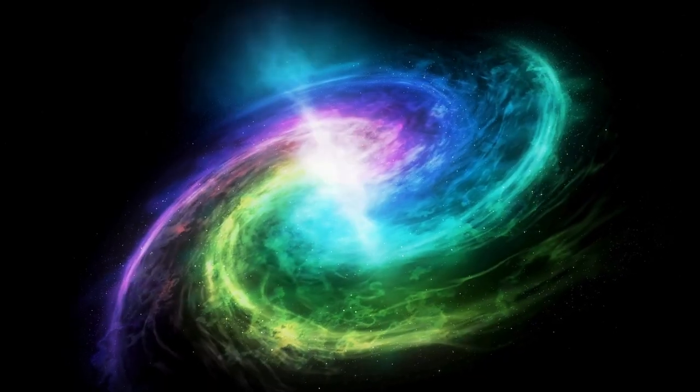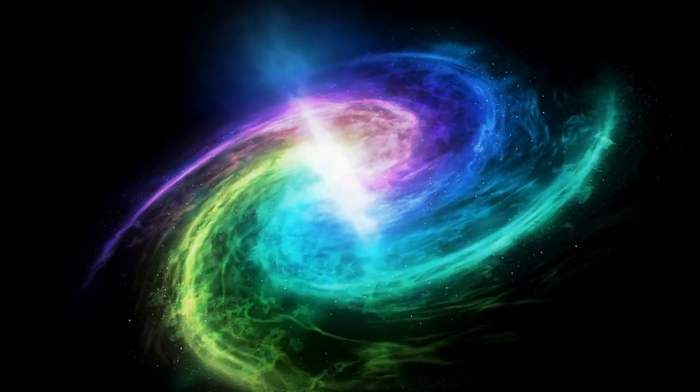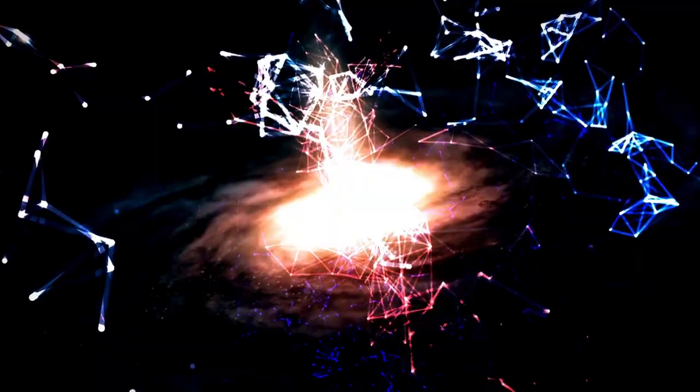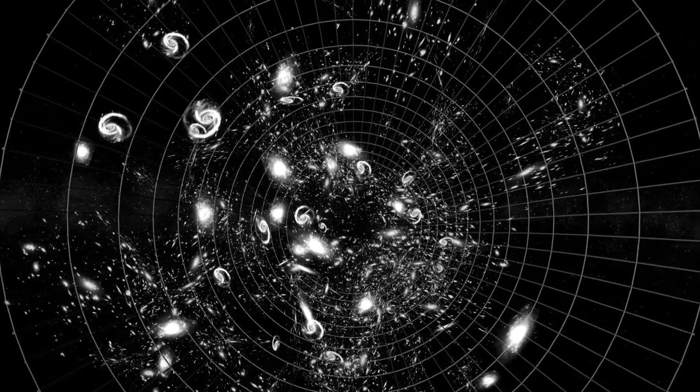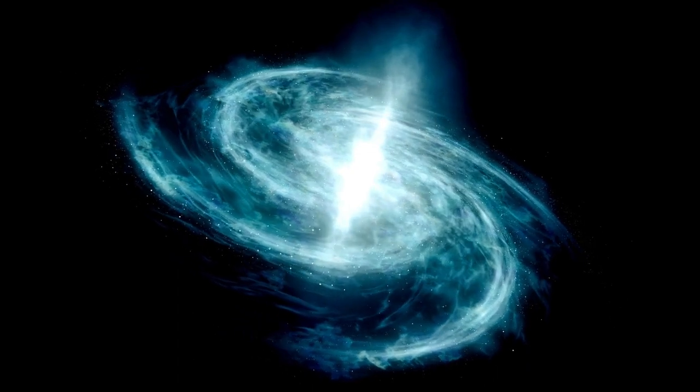Who theorized that black holes could provide an unlimited source of energy by extracting rotational energy from the ergosphere. The ergosphere is a region located just outside the event horizon of a black hole, where matter falls into a rapidly spinning disk and emits enormous amounts of radiation.